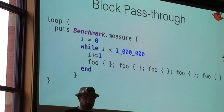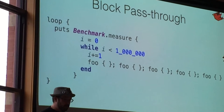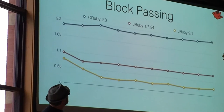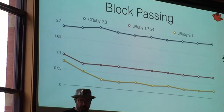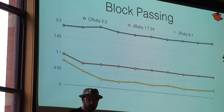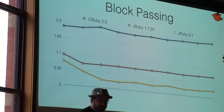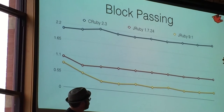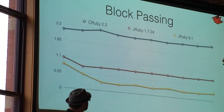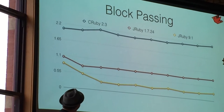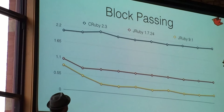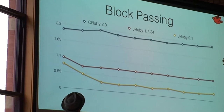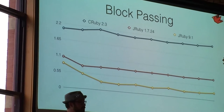If it sees that you're capturing the block and immediately passing it out again, it doesn't create the object. It just sends it through. So we've got a very trivial benchmark here, just running that same code through a bunch of iterations and measuring how long it takes. And here's what we get. So at the very top, CRuby 2.3. JRuby has generally been faster. The red line there is JRuby 1.7 without this optimization. And the yellow line is JRuby with the optimization.